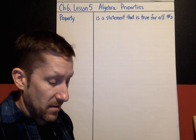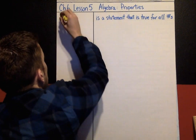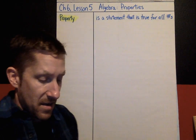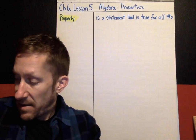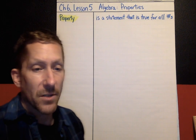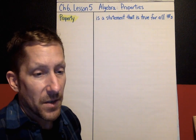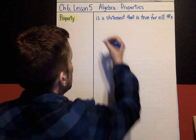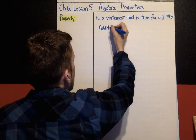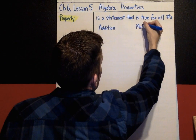Today we're going to learn about some properties — a couple of these we've already talked about, so they're coming back around again. For these properties, there are addition versions and multiplication versions. We're going to separate our page: addition properties on this side, and multiplication properties on this side.